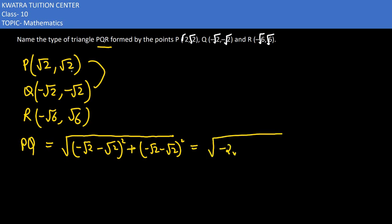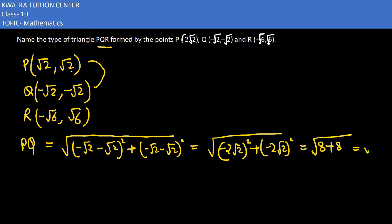That gives us (-2√2) squared plus (-2√2) squared. Taking the square of the first value, we get 4 × 2 = 8. So we have √8 + √8 = √16, and √16 is nothing but 4. So PQ = 4.